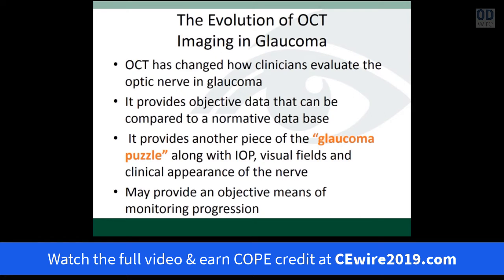We've all seen a patient who we consider a glaucoma suspect, and there's no question our sensitivity in discriminating a physiologic cup from a glaucomatous cup can be difficult. We know that big nerves can have big cups, and of course that puts a patient at risk of having glaucoma. Until you do a visual field and other assessments, it's difficult to distinguish physiologic cupping from glaucomatous cupping.